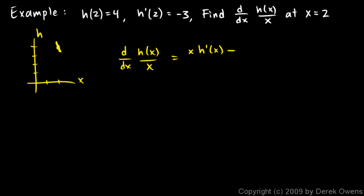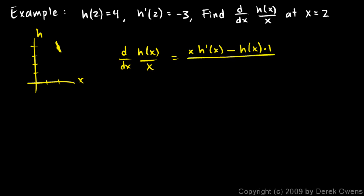Minus high, which is h of x, times the derivative of the denominator — and that's the derivative of x, which is 1. x is a function, and the derivative of that function is 1. And then I need to divide by the denominator squared, which would be x squared.